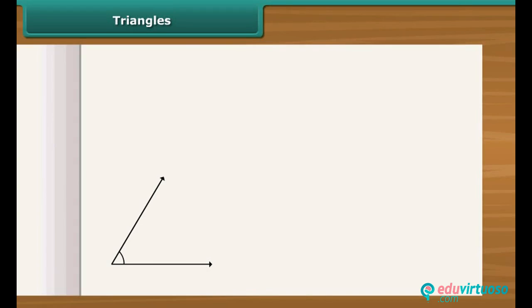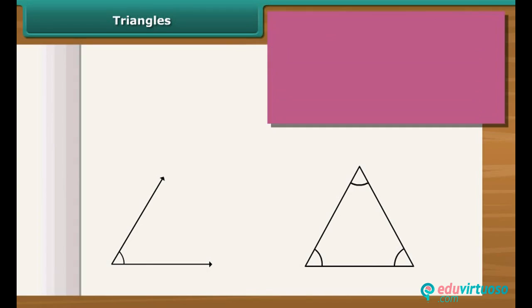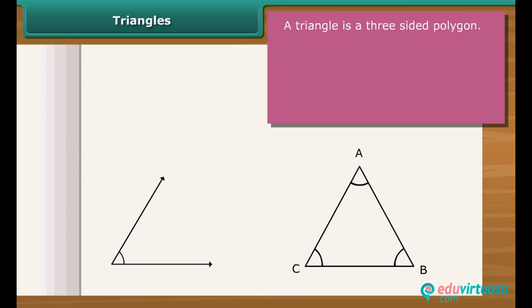An angle is not a closed figure. A closed figure with least number of sides is a triangle. A triangle has three sides, three vertices and three angles.